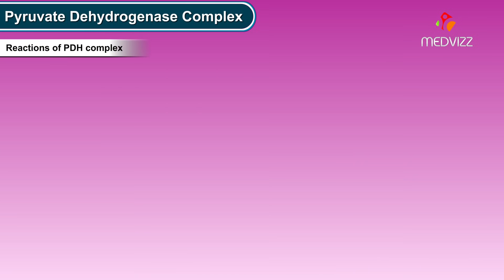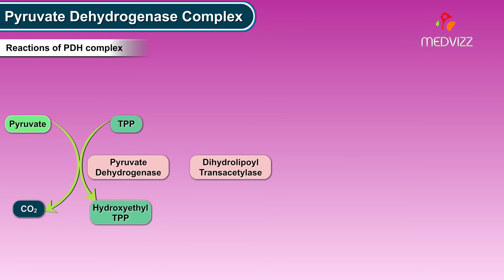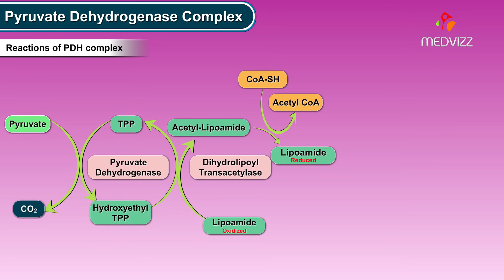The sequence of reactions of the PDH complex proceeds as follows. First, pyruvate dehydrogenase with TPP as coenzyme decarboxylates pyruvate to hydroxyethyl thiamine pyrophosphate. Then dihydrolipoyl transacetylase catalyzes conversion of hydroxyethyl thiamine pyrophosphate into acetyl lipoamide and transfers the acetyl group to coenzyme A to produce acetyl coenzyme A.